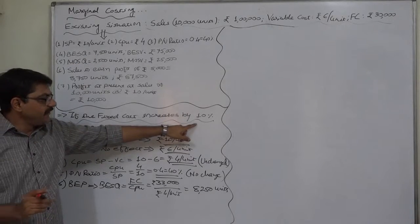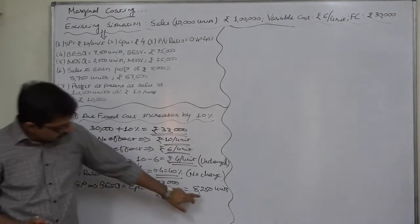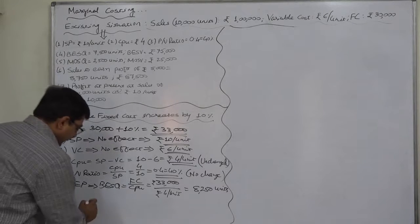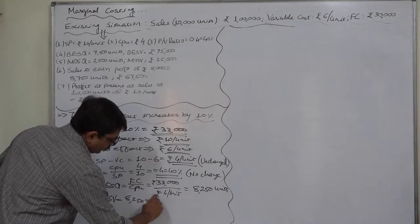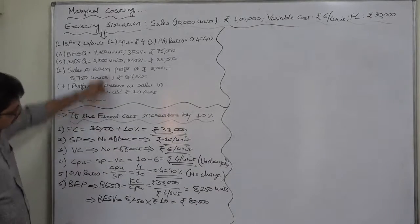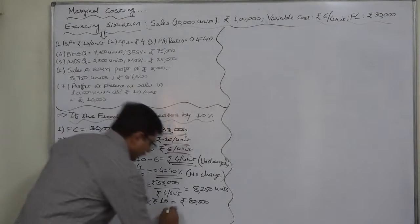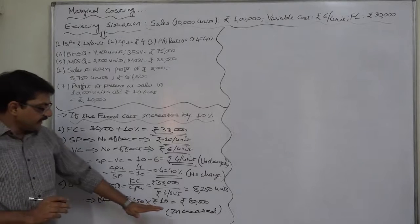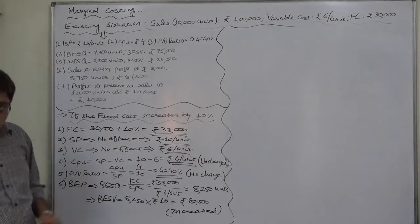So with increase in fixed cost by 10%, the BEP has also increased by 10%. Against 7,500 units, the increase is 750 units, 8,250 minus 7,500. In terms of value also, the same thing is going to happen: 8,250 into unchanged selling price of rupees 10, so it comes to 82,500 rupees, that is also 10% more than the existing breakeven sales value. But the ultimate comment is increased. So principally we can accept that if the fixed cost increases, the BEP will also increase.